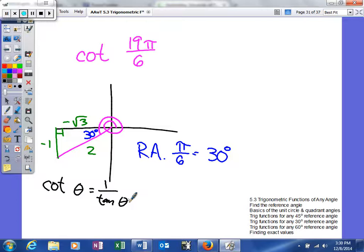Well, tangent's opposite over adjacent. So we're looking for the adjacent side, which in this case is negative square root of 3, over the opposite side, which is negative 1. So when we simplify that, we'll get our cotangent of 19π/6 to be the square root of 3.